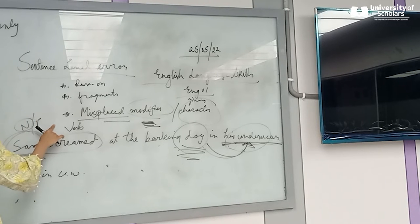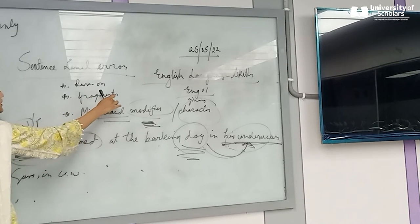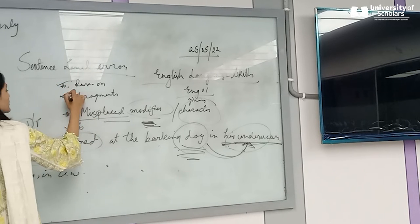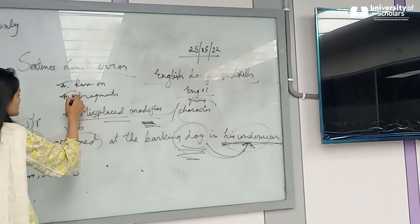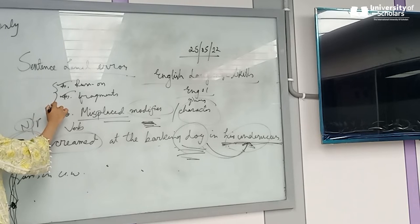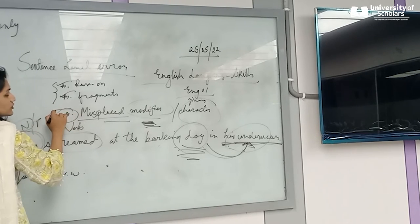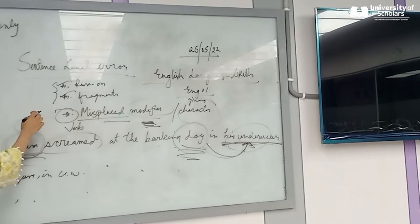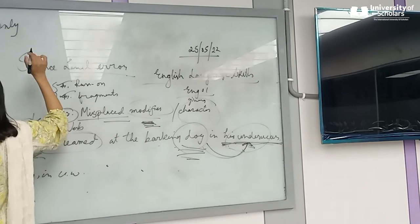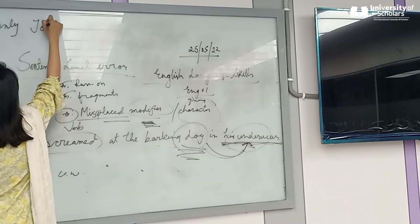So to recap: we have run-ons, fragments, and misplaced modifiers. We covered run-ons and fragments in previous classes and did exercises. Now we're doing misplaced modifiers. Let's look at some more examples.